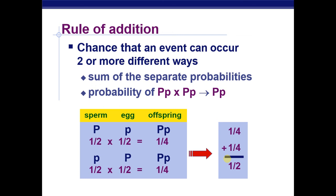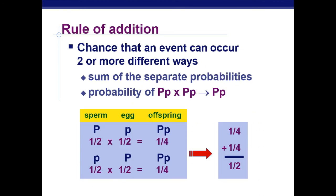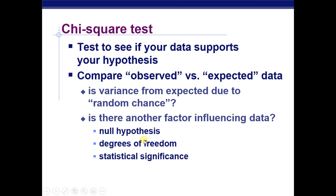Next week we're going to look at the chi-square test. This is a statistical test we'll use to see if data collected on crossing different individuals and looking at heredity patterns supports or doesn't support our hypothesis, by comparing what we observed in our experiment versus the expected data from a Punnett square. We'll also talk about a whole bunch of other extensions. I just included it here because genetics and statistics are very closely intertwined, and we're going to continue looking at this in the future.